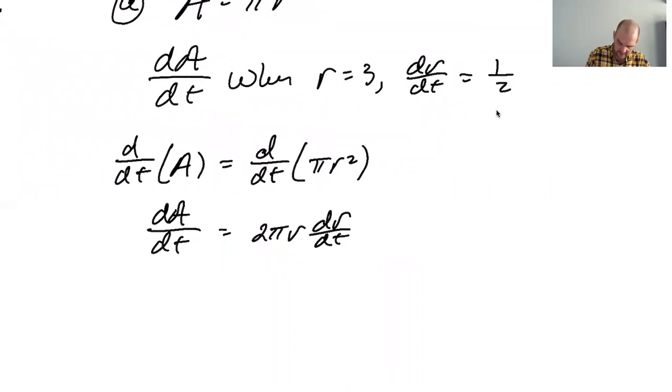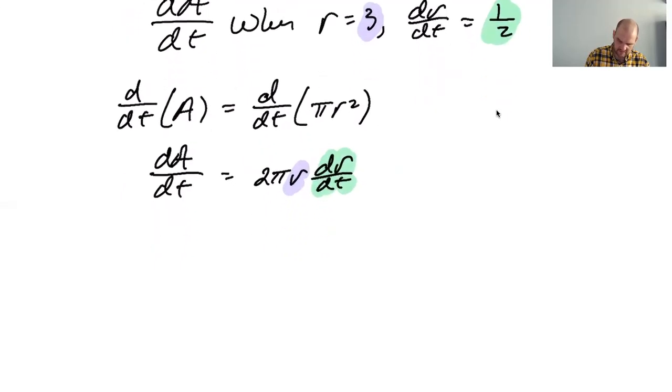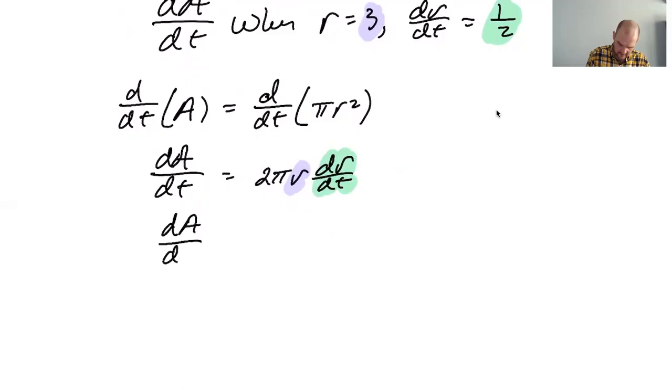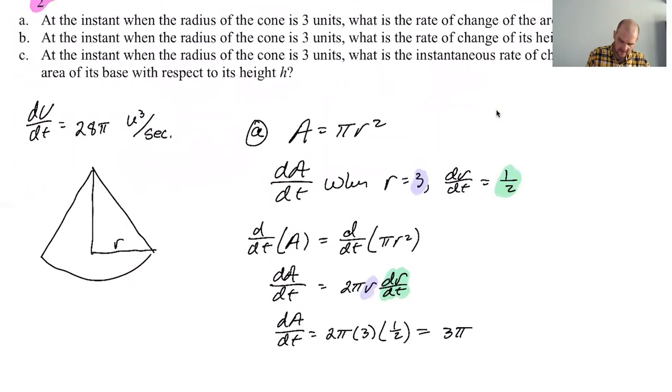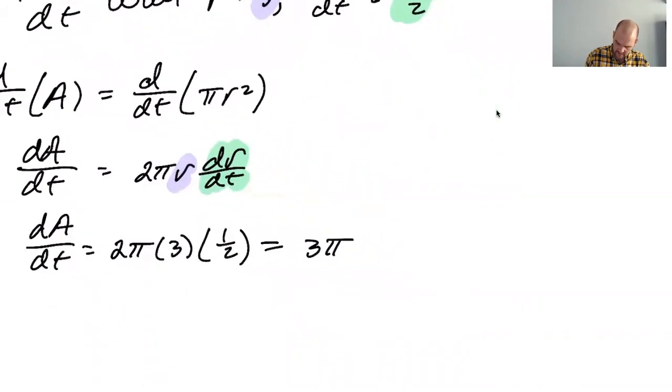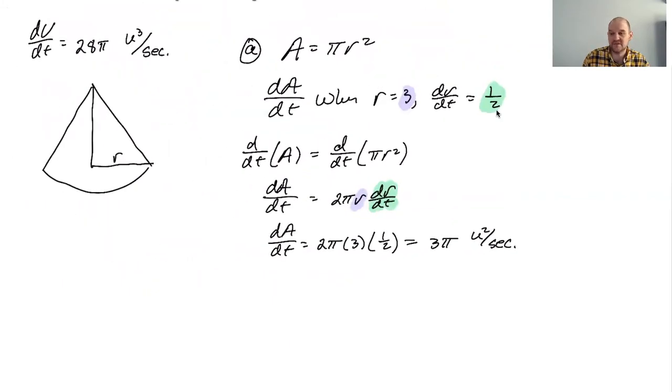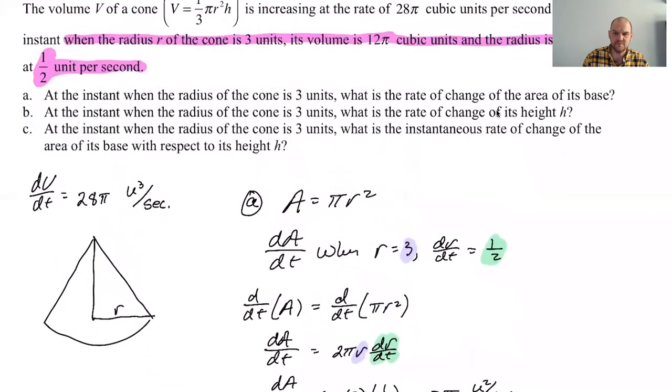All right, so then we know r is going to be three. And we know dr/dt is going to be one half. So it's going to be two times pi times three times one half. So dA/dt is going to be three pi. Okay, so what are our units? Since this is in units cubed per second, area will be in units squared per second. It's unclear to me if you need the units on your answers here. Like, I mean, if they give you units, use units on your answer.